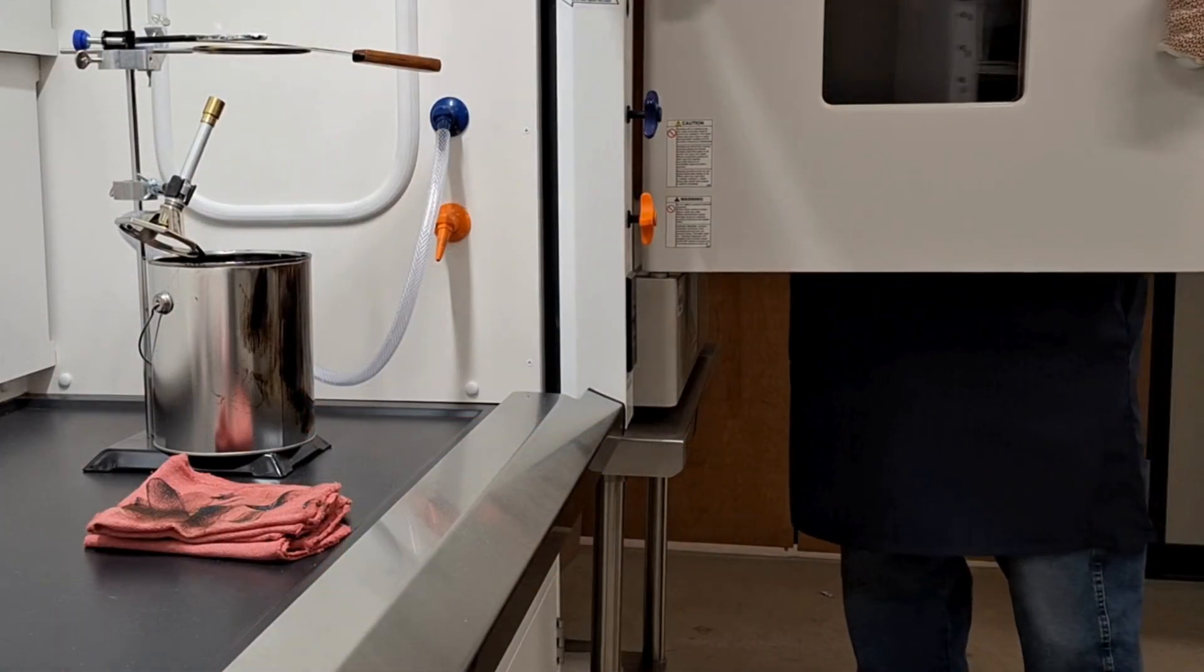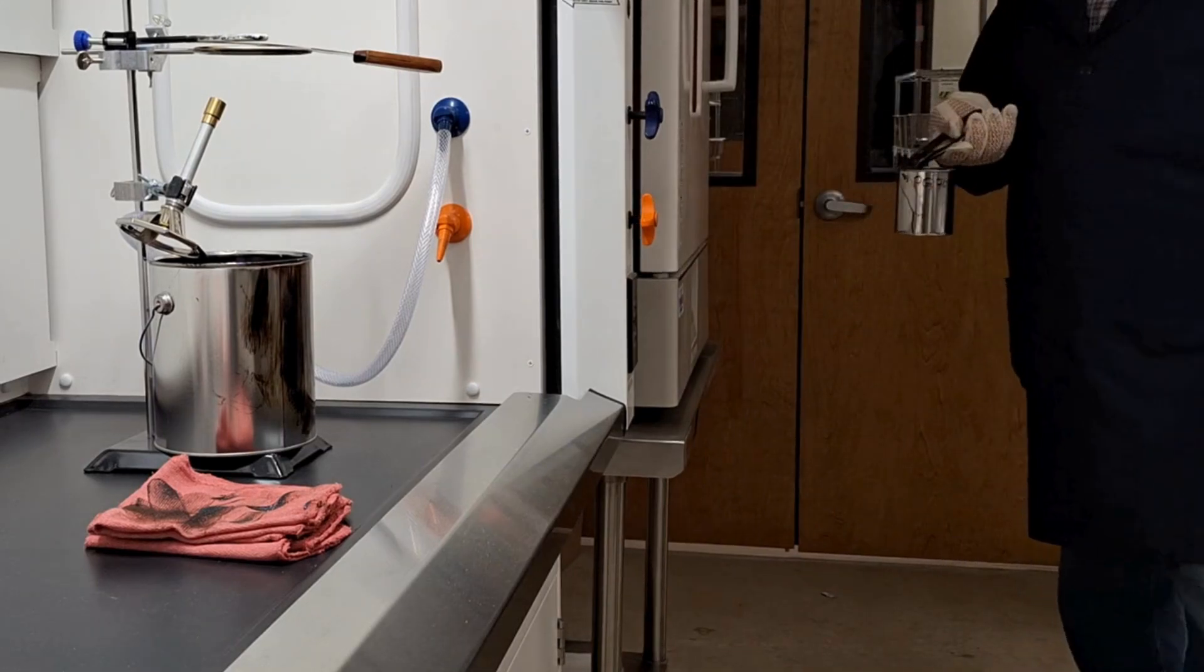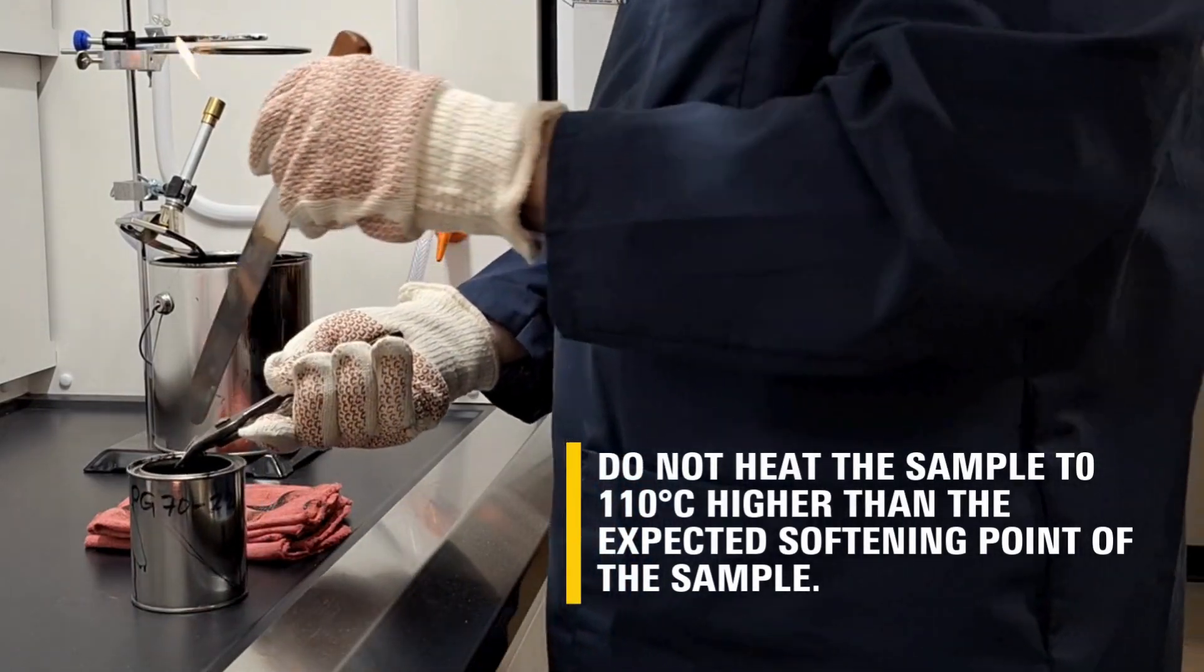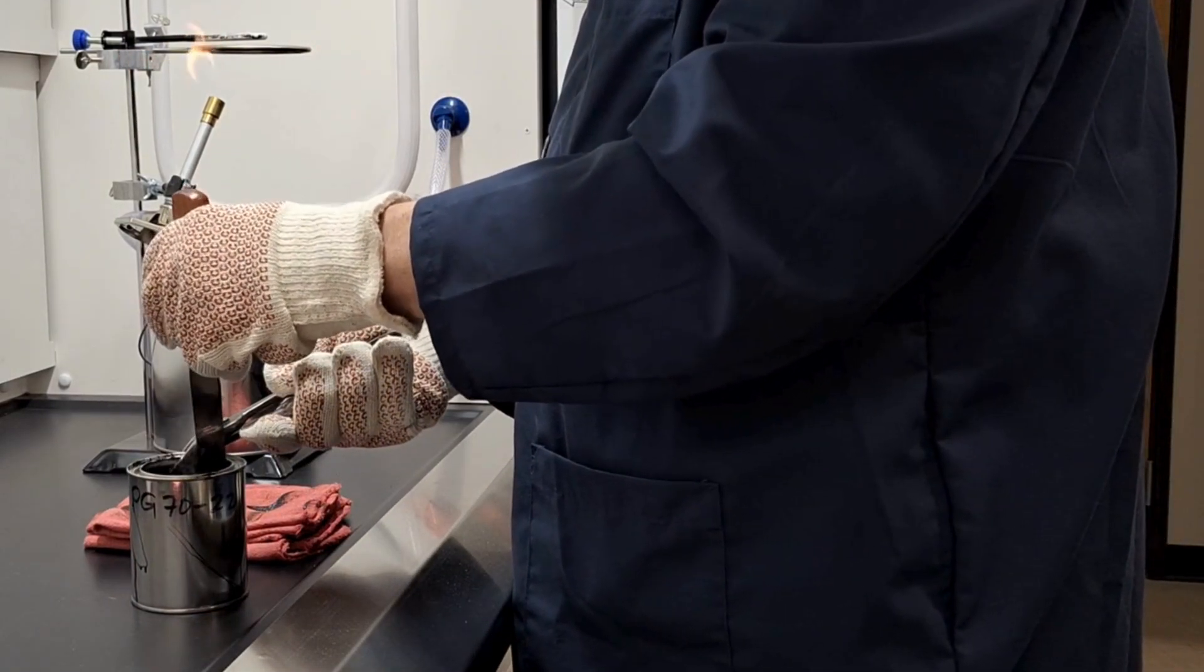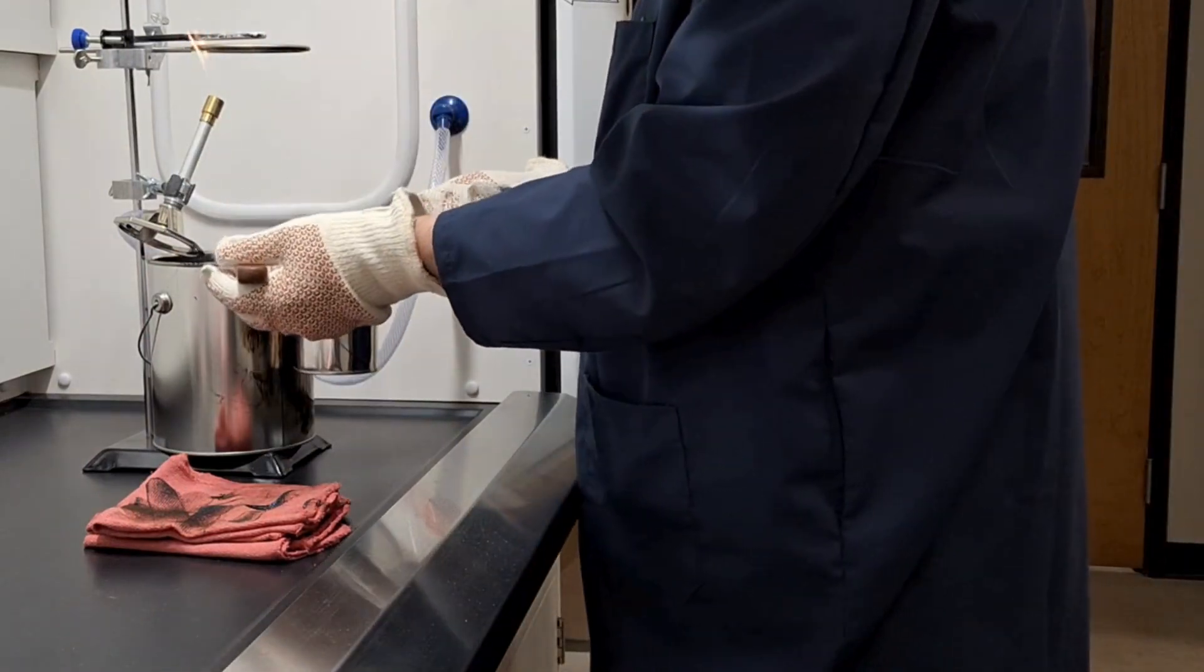Heat the sample for the minimum time necessary to ensure the material is sufficiently fluid. Do not heat the samples to 110 degrees Celsius higher than the expected softening point of the material. Stir the material frequently as it is heating up to create a uniform sample.